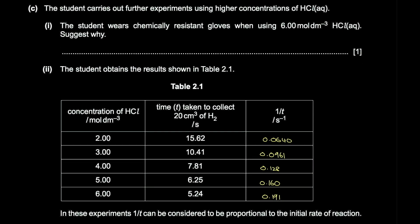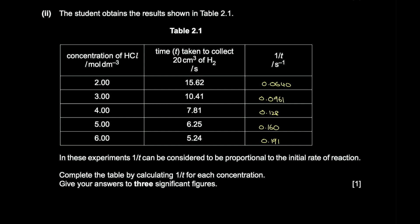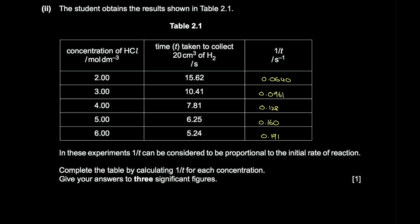The student wears chemically resistant gloves when using 6 mol/dm³ HCl because concentrated HCl is corrosive. The student's results in table 2.1 show different concentrations of HCl and the time taken to collect 20 cm³ of hydrogen gas, measured in seconds.